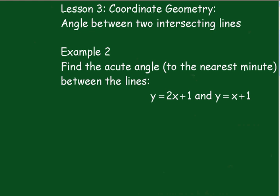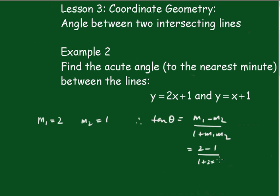Example 2: Find the acute angle to the nearest minute between the lines y equals 2x plus 1 and y equals x plus 1. So now we'll write down the gradients, it's a fairly straightforward one. So m1 is equal to 2 and m2 is equal to 1. Therefore, the tan of theta is m1 minus m2 over 1 plus m1 m2, which is 2 minus 1 over 1 plus 2 times 1.